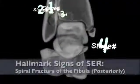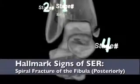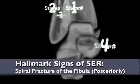In summary, the hallmark signs of this injury include the injury beginning along the lateral axis of the fibula. The spiral fracture seen in stage 2 is unique to supination external rotation injuries.